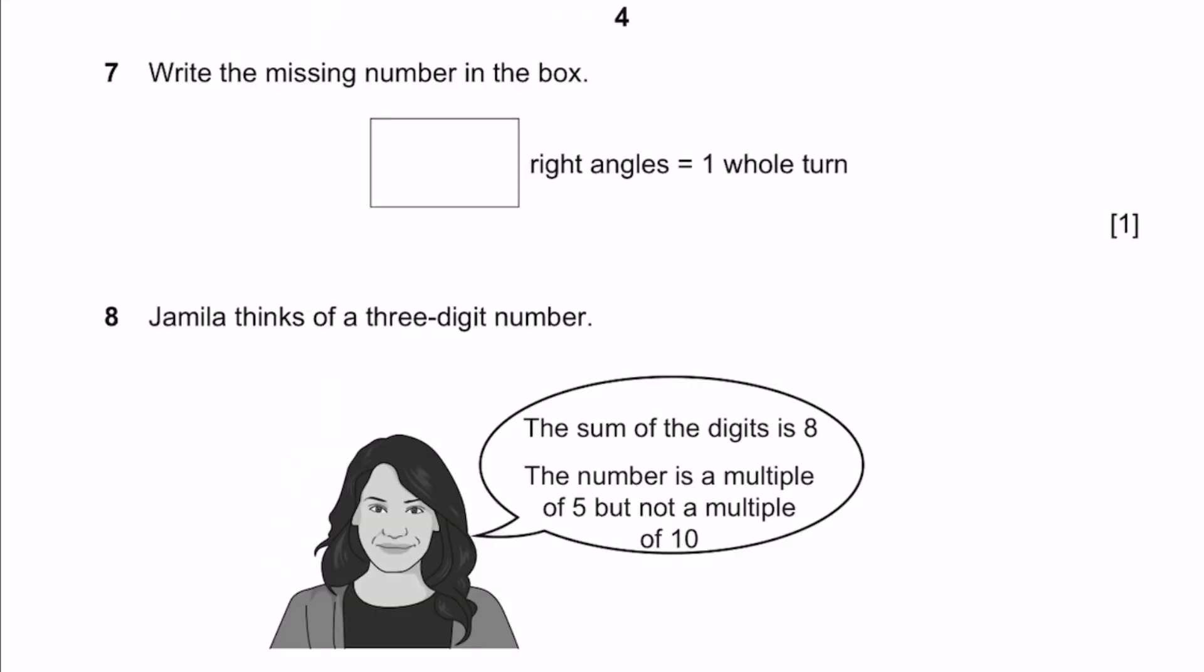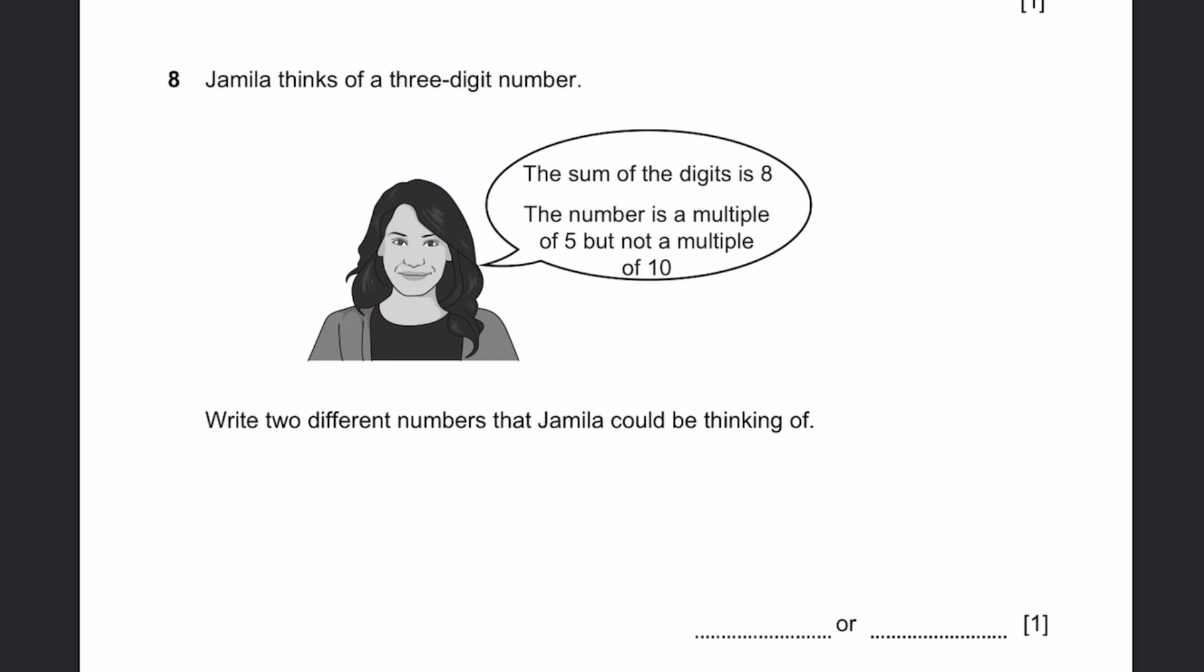Question 7. Write the missing number in the box. Dash right angles equals one whole turn. One whole turn is 360 degrees. Right angle is 90 degrees. So 4 into 90 degrees, we get 360. So it's 4 right angles. Question 8. Jamila thinks of a three-digit number. The sum of the digits is 8. The number is a multiple of 5 but not a multiple of 10. If it's a multiple of 5 but not a multiple of 10, the digits must end in 5. Since the sum of all three digits is 8, the sum of two digits must be 3. So we can put, for example, 125 or 215.